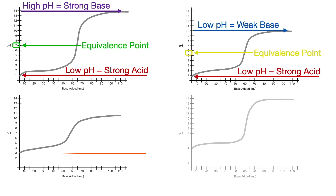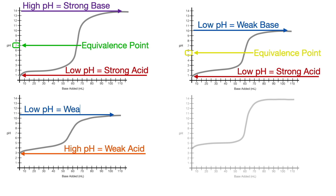Now, if titration starts at a high pH, it indicates a weak acid, and if it ends at a low pH, it indicates a weak base, like we saw with the base on the top right curve. And like a strong acid-strong base titration at the top left, a weak acid-weak base titration will have an equivalence point at neutral pH of 7, right in the middle of the pH scale, because they have equivalent strengths.